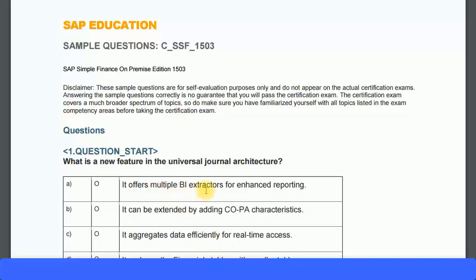Looking at the answer options: option A — it offers multiple BI extractors for enhanced reporting — is not specific to universal journal, as this was available before in ERP6. Option B — it can be extended by adding COPA characteristics — is correct, because in the universal journal architecture, COPA characteristic values are passed as part of the ACDOCA table. Option C — it aggregates data efficiently for real-time access — is not specific to universal journal architecture; it applies to the entire SAP HANA architecture.